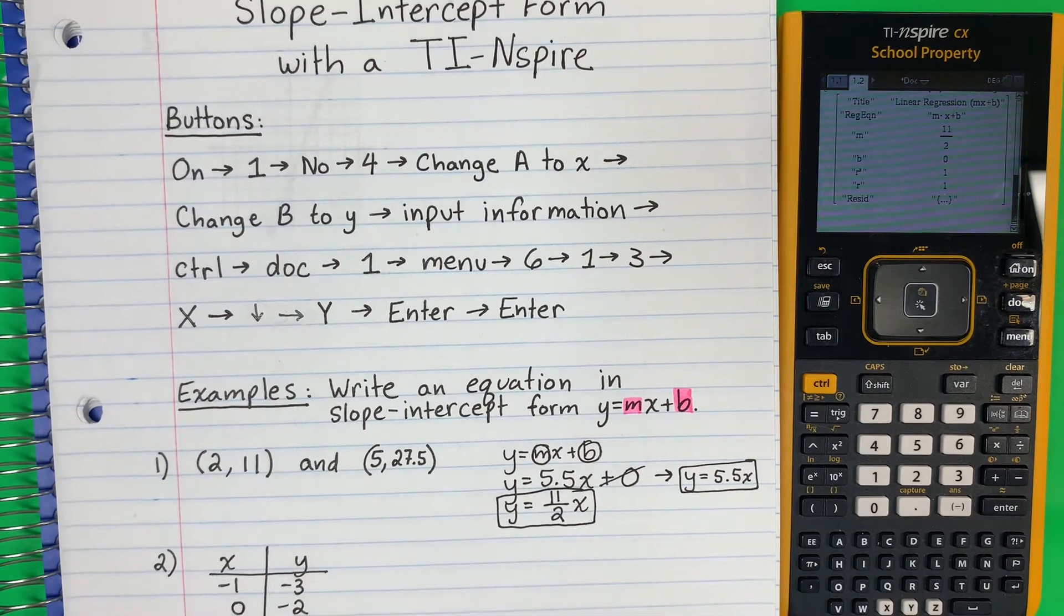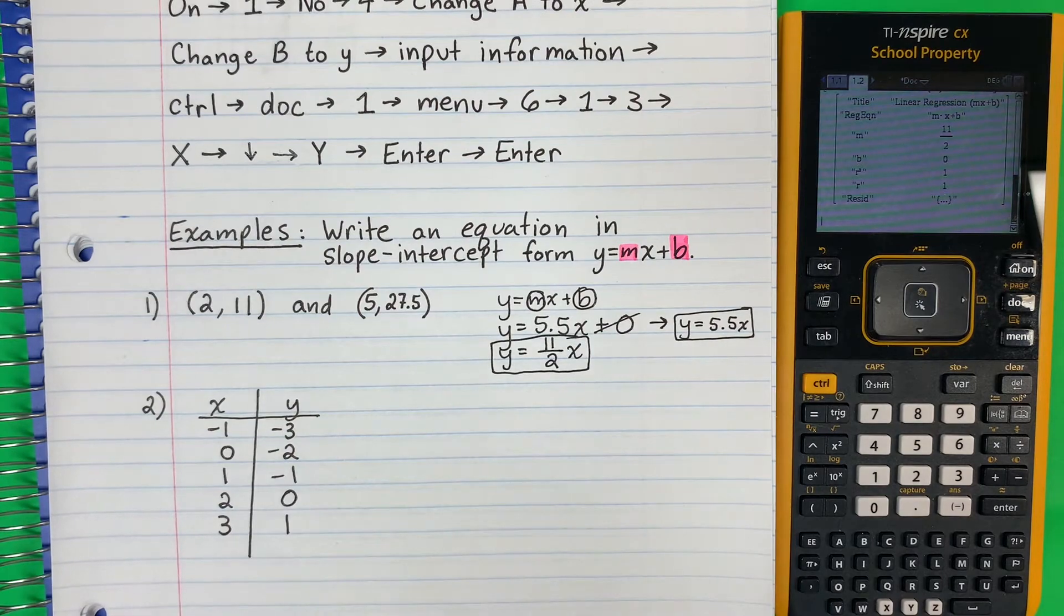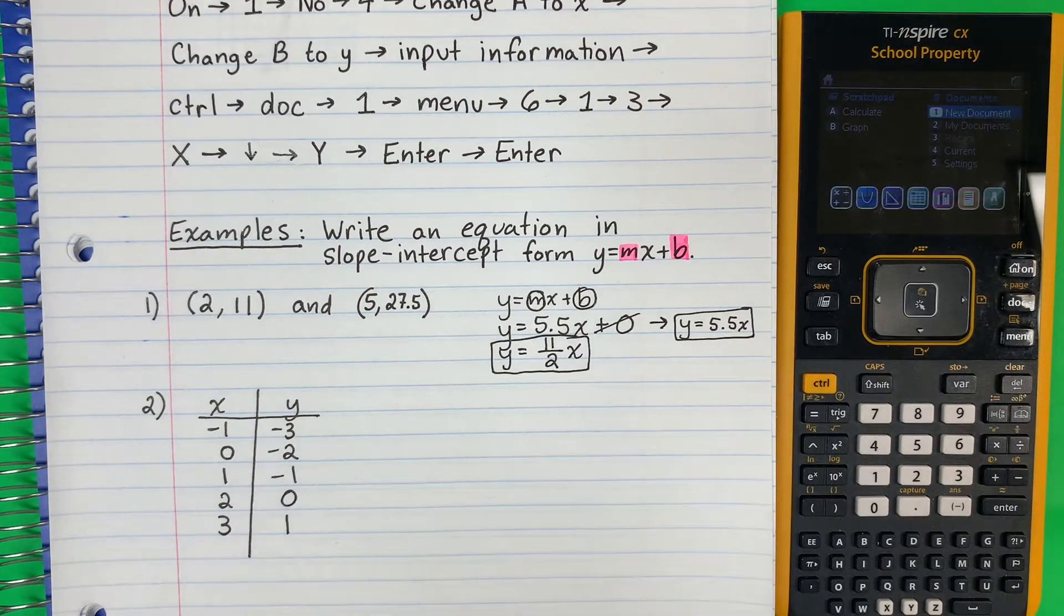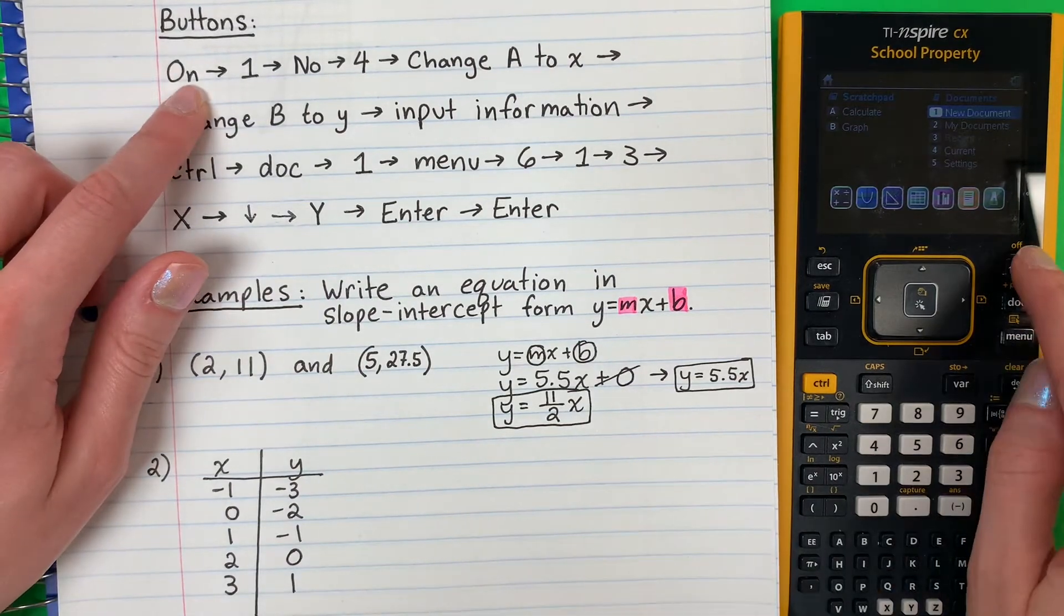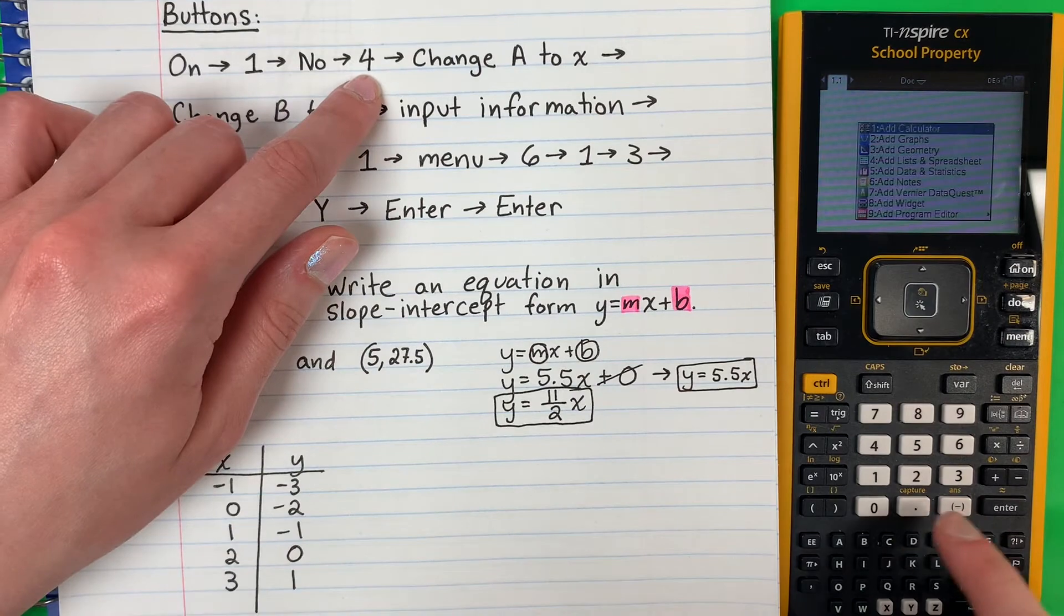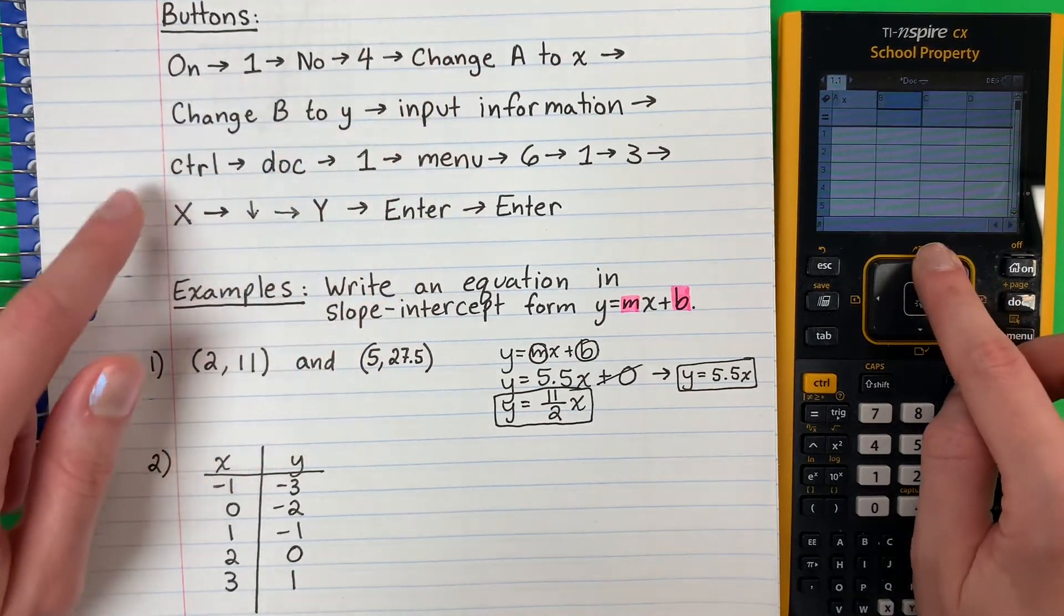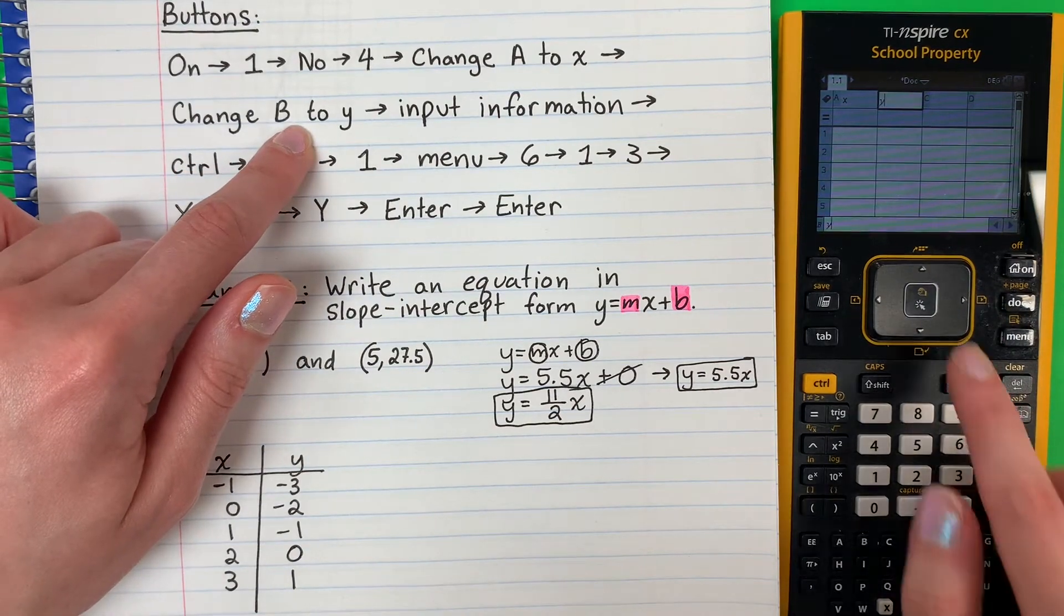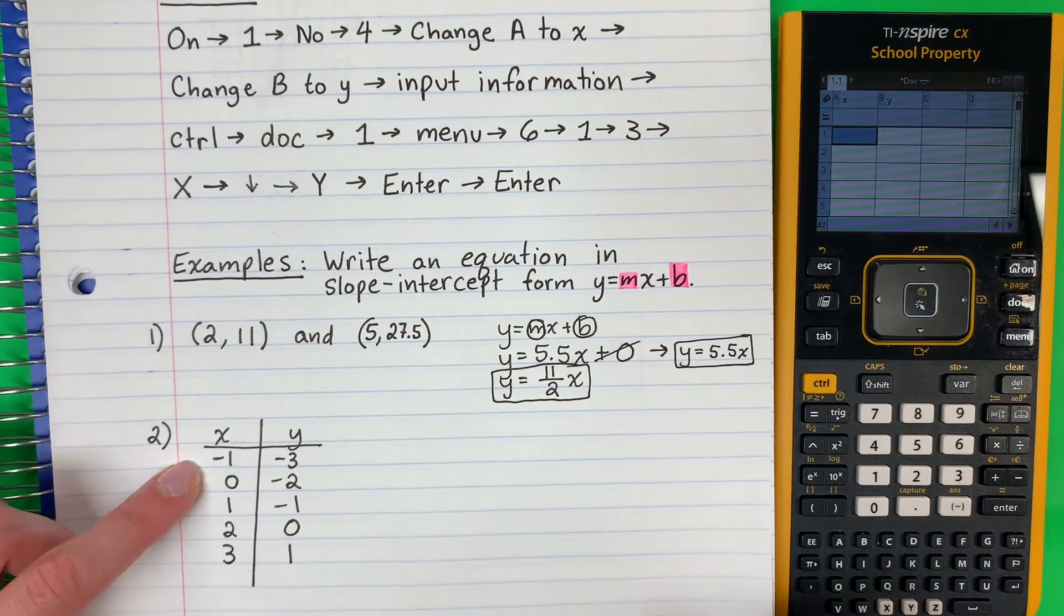Let's go ahead and do another one. Vamos a hacer una otra. So this one is with a table. Es con una tabla. So go ahead and push on. And if you need it, si necesitan, you can go ahead and use this. So on, one, no, four. Change A to X. Change B to Y. Go down here. Put the information. Vamos a poner la información.